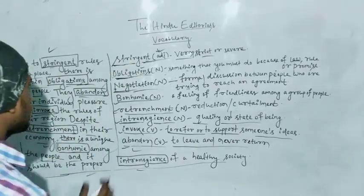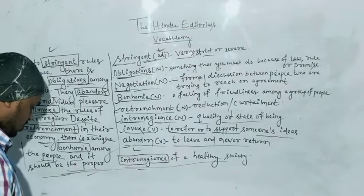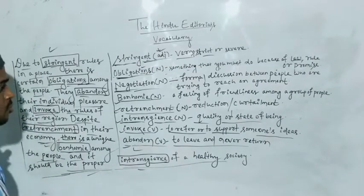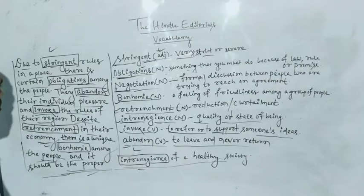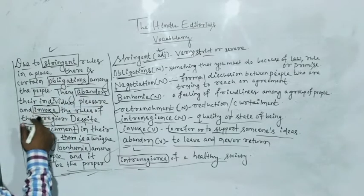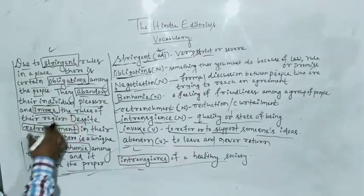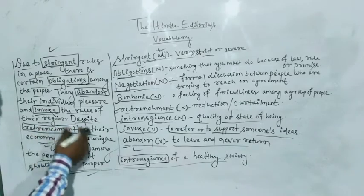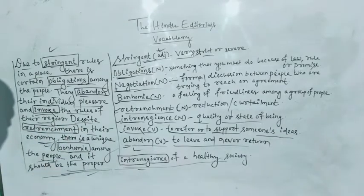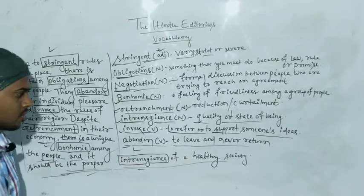So let us summarize this story. Due to stringent rules in a place, there is a certain obligation among the people. They abandon their individual pleasures and invoke the rules of the region. Despite retrenchment in their economy, there is unique bonhomie among the people and it should be the proper intransigence of a healthy society.